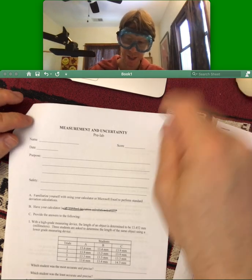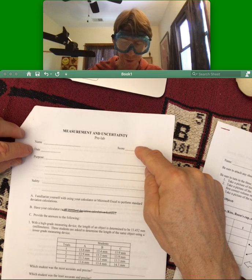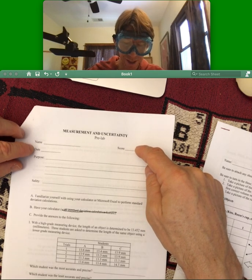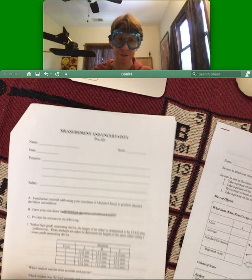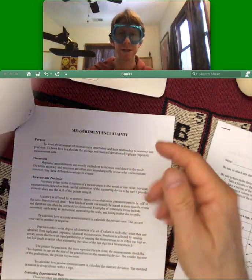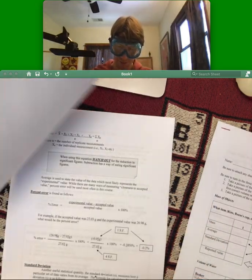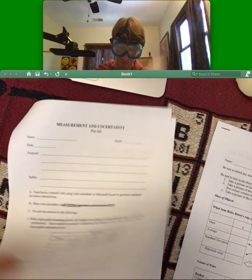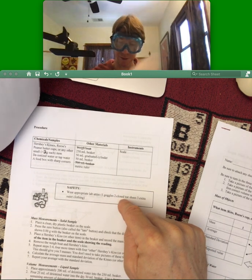Over the pre-lab, for the pre-lab you're going to do your name, don't worry about your score of course, the date that you're completing it, the purpose and the purpose of the lab can be found on page number one. Please go ahead and write it and the safety can be found on page number four. Please write the safety that you have to take into account too.